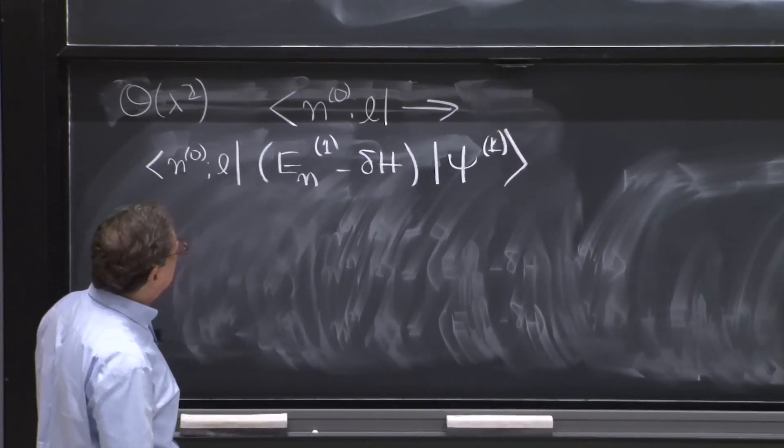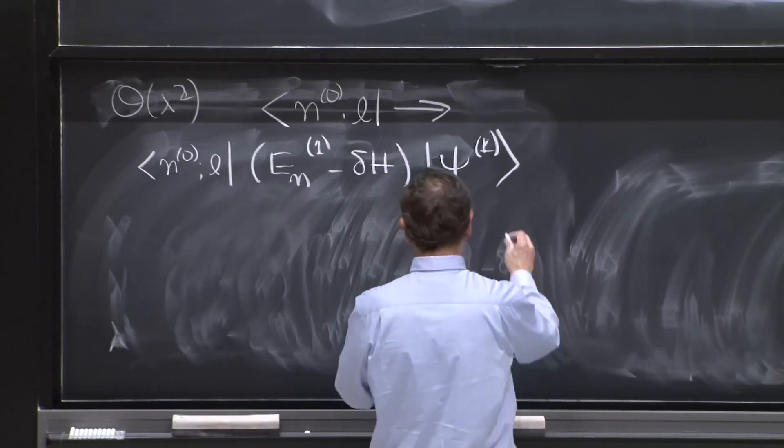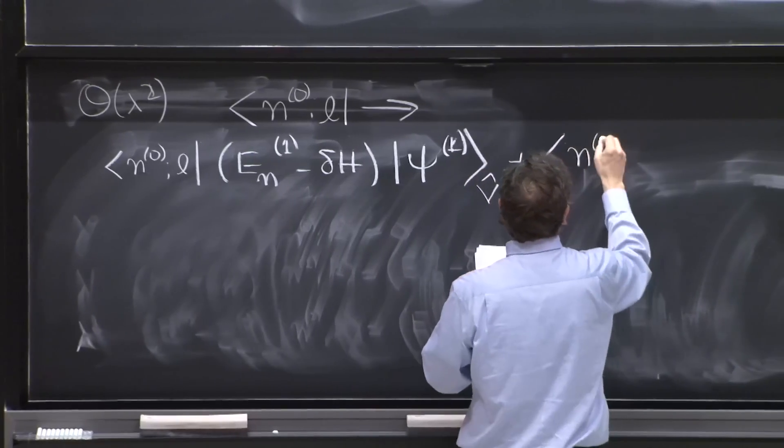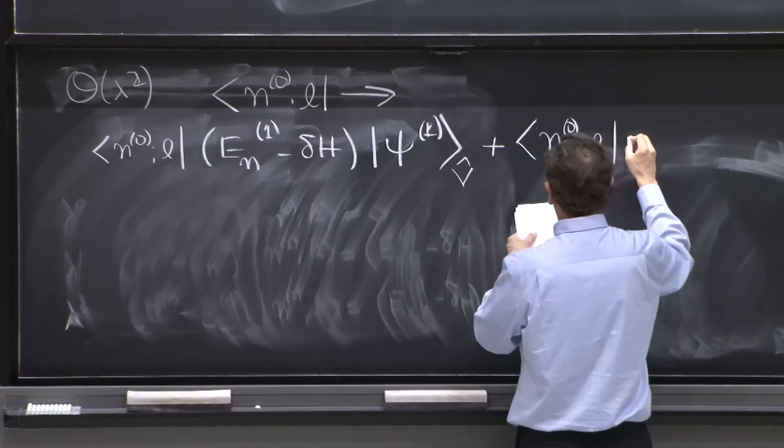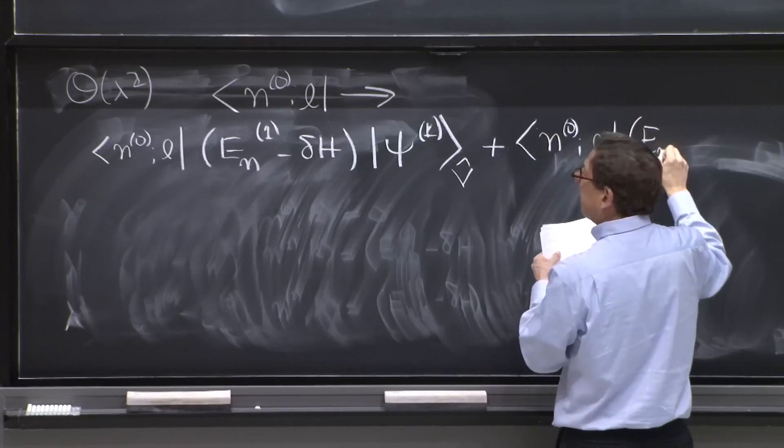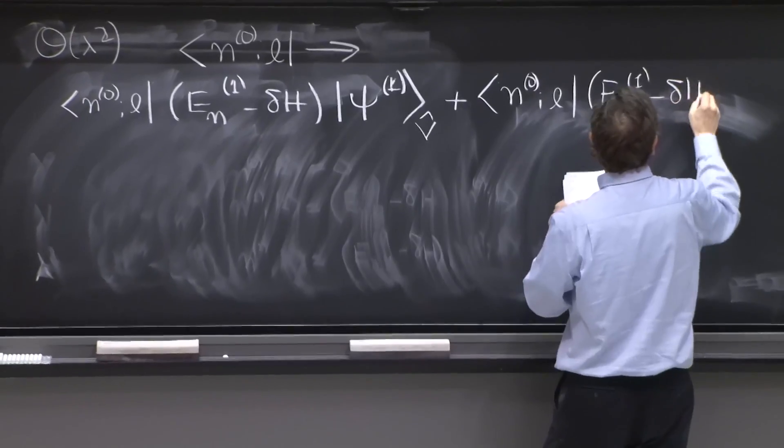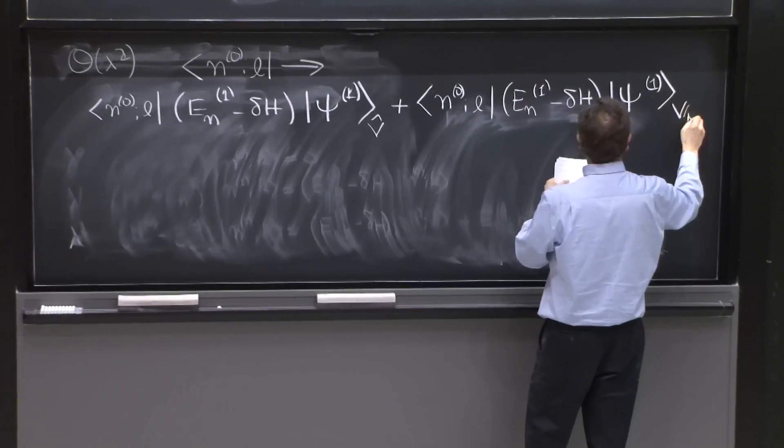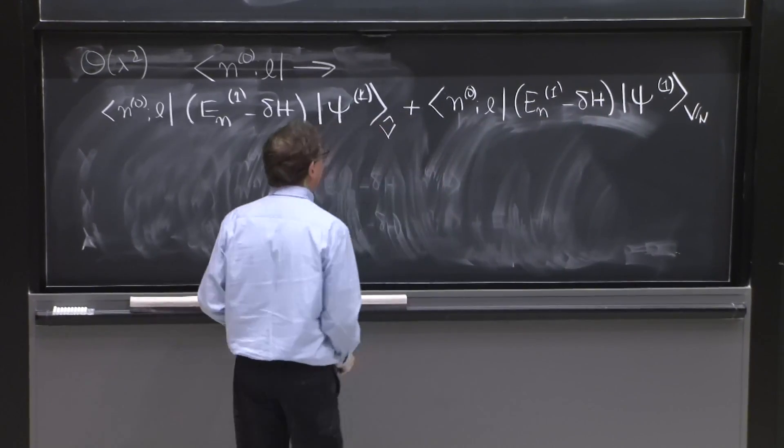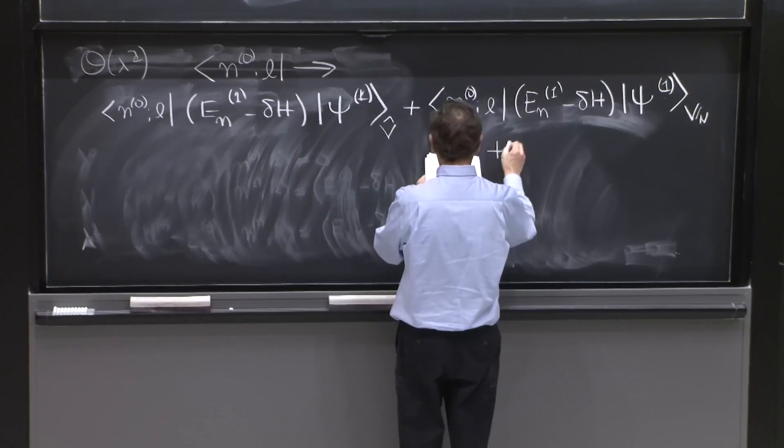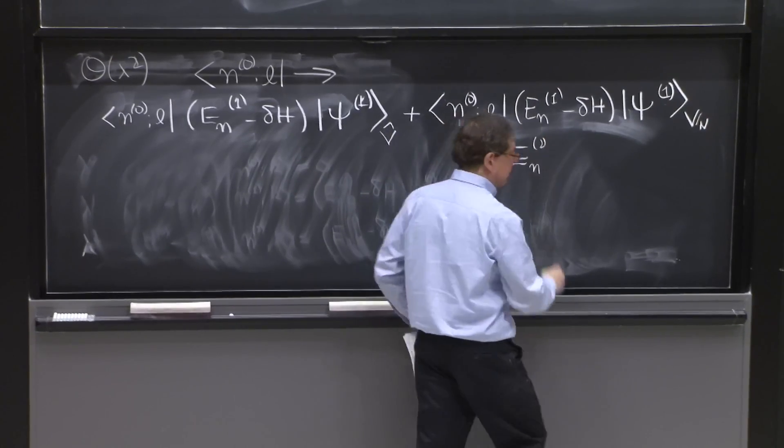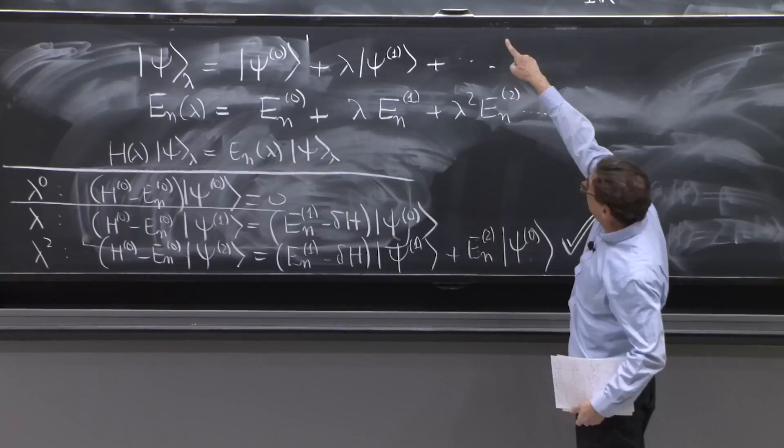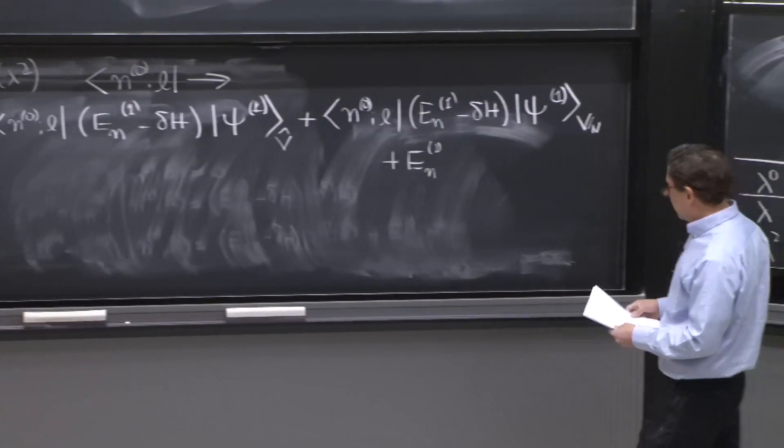But again, psi 1 has two pieces. It's a piece in the space v hat that we just calculated, plus a piece in the space of v tilde n, n1 minus delta H psi 1 b_n, plus the energy, which would be E_n^2 in here. And we hit with n0 L, so we pick an a_L^0.